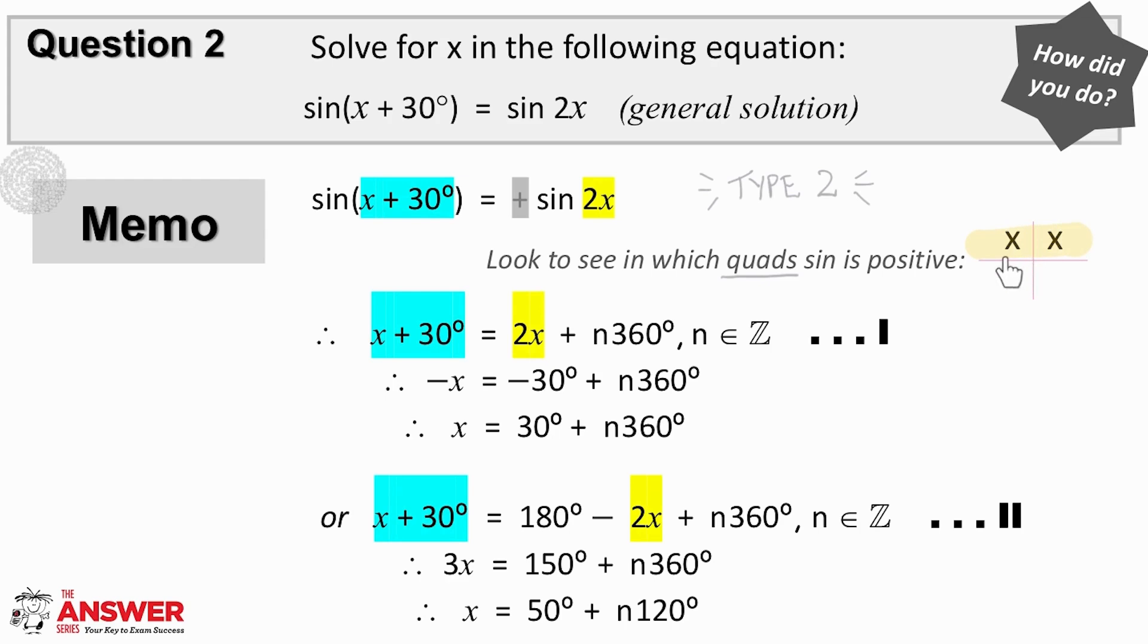Then, we identify the quads to solve in. In this case, the question is, where is sin positive? And then lastly, in order to simplify and solve, we need to check the required interval. In this question, we have been asked to give the general solution.